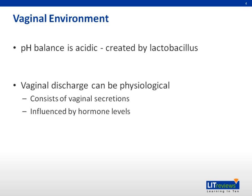The normal vaginal environment is acidic with a pH of 3.8 to 4.4, thus discouraging infections. This environment is created by normally occurring bacteria, lactobacilli. Any disruption to the pH balance of the vaginal environment can make it more conducive to infection.